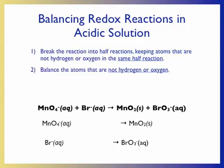Our second step is to balance the atoms that are neither hydrogen nor oxygen. In this case, we don't have to make any changes. There is one manganese atom on both sides of the first half-reaction, and one bromine atom on both sides of the second half-reaction.